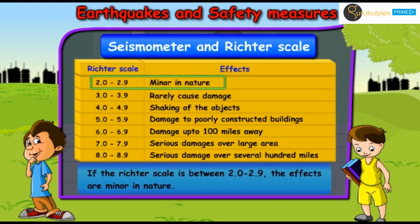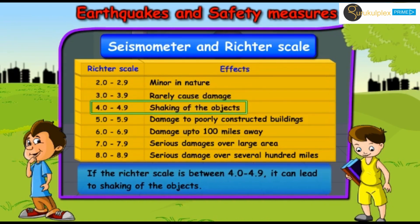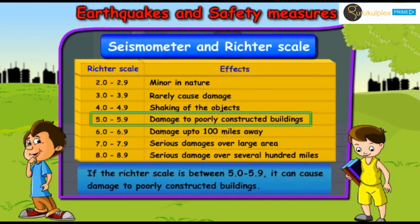If the Richter scale reads between 2.0 to 2.9, the effects are minor in nature. If it reads between 3.0 to 3.9, the effects are often felt but rarely cause damage. If it reads between 4.0 to 4.9, it can lead to shaking of objects. If it reads between 5.0 to 5.9, it can cause damage to poorly constructed buildings.